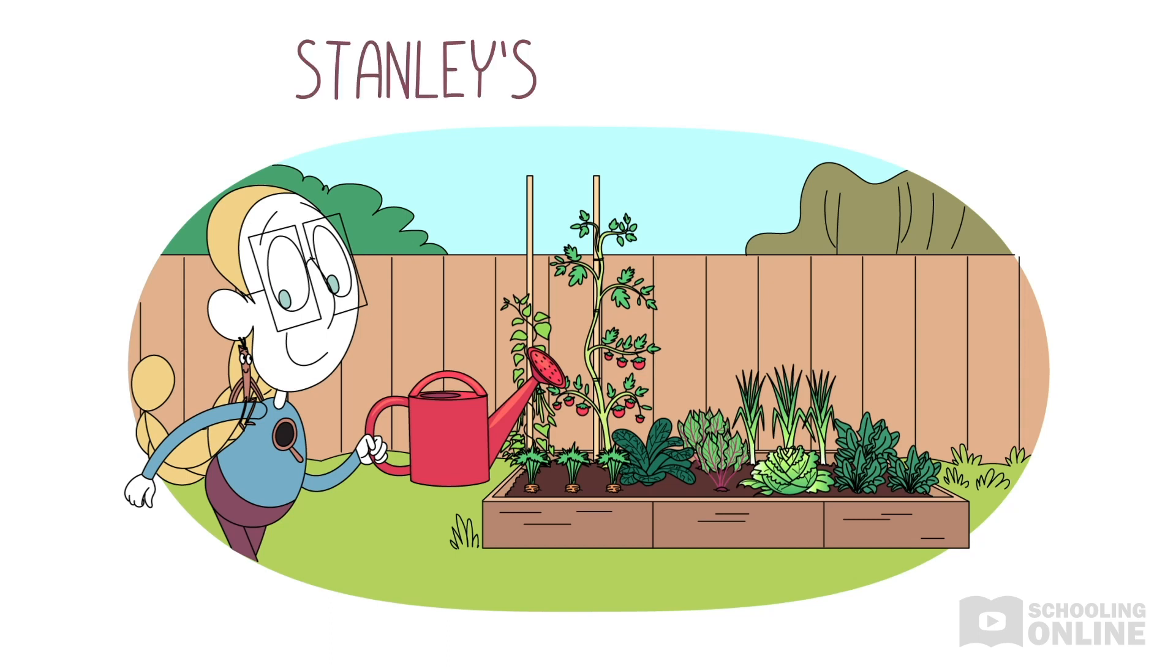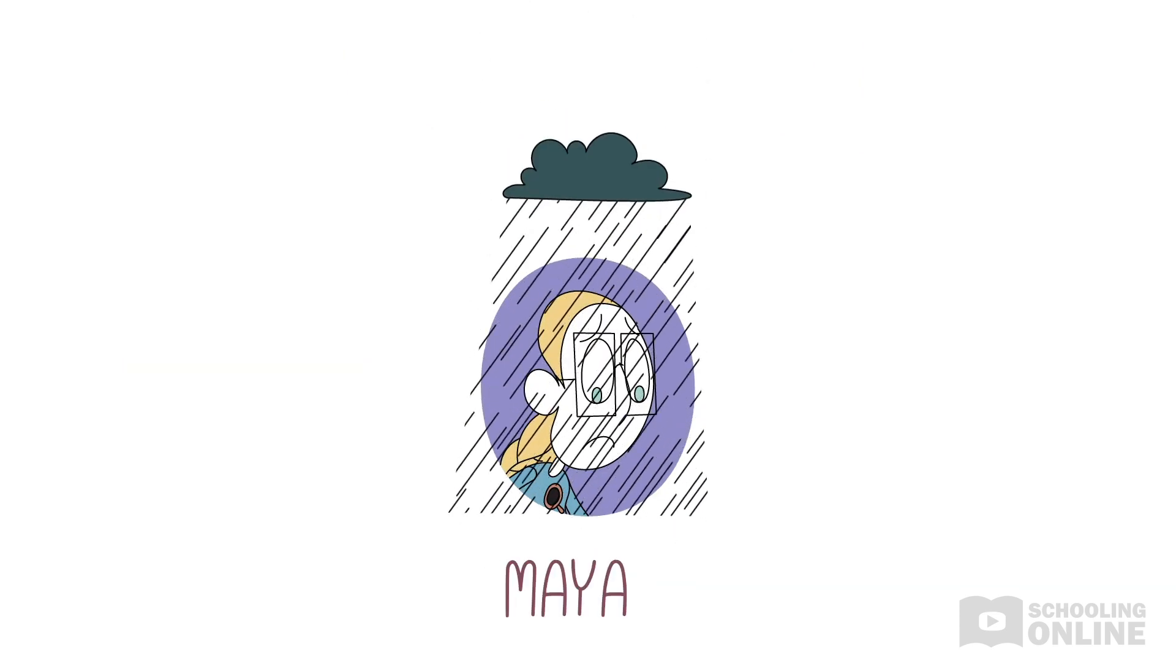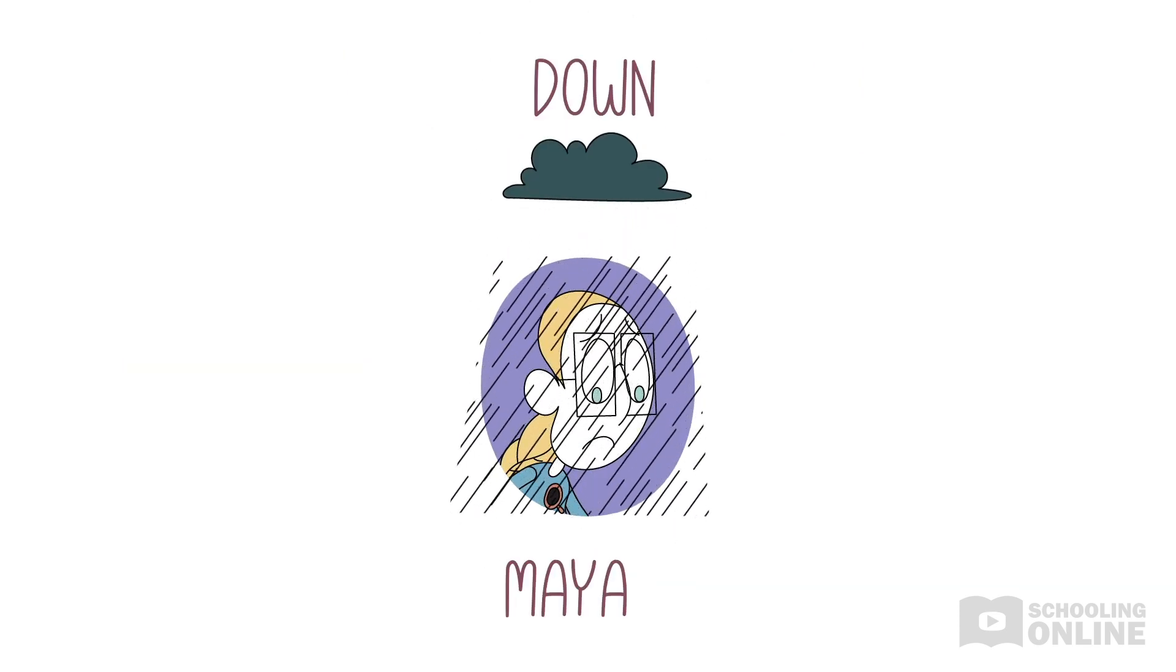Today's story is Stanley's Veggie Patch. Maya frowns. She's feeling down. Her eyebrows knit together. She's feeling under the weather.